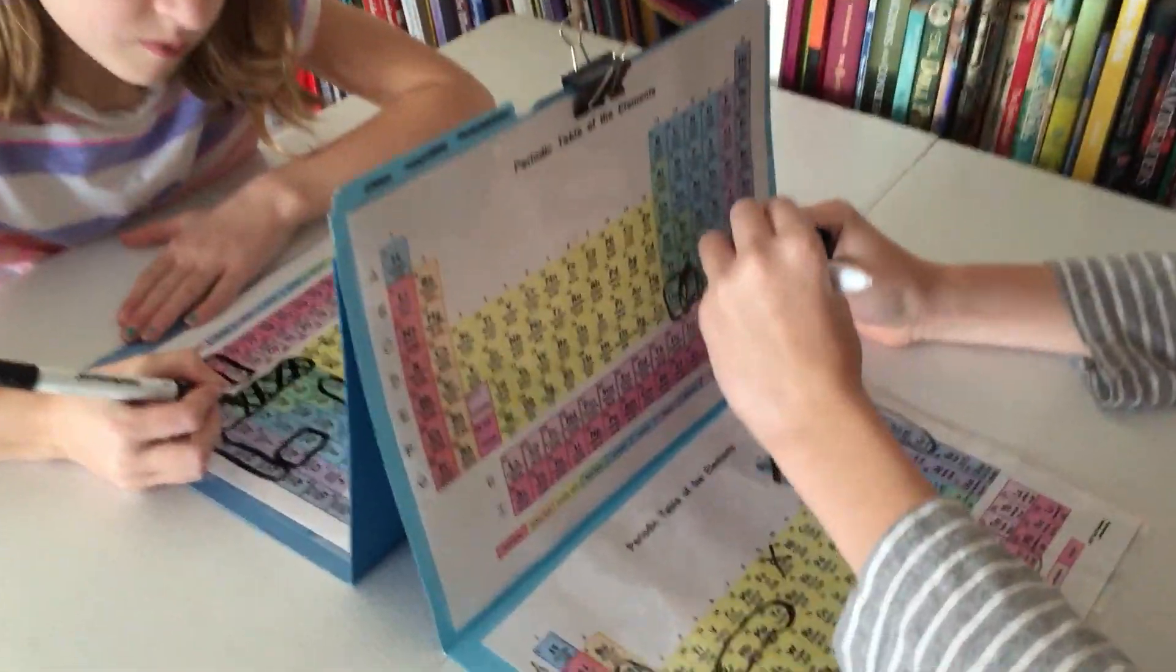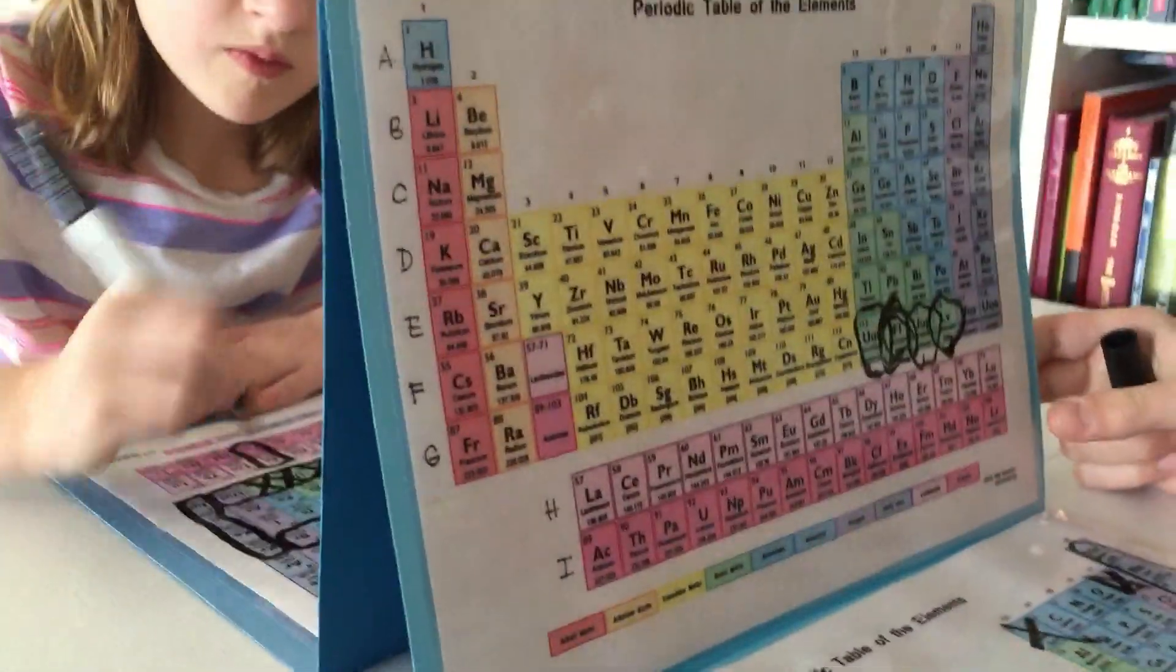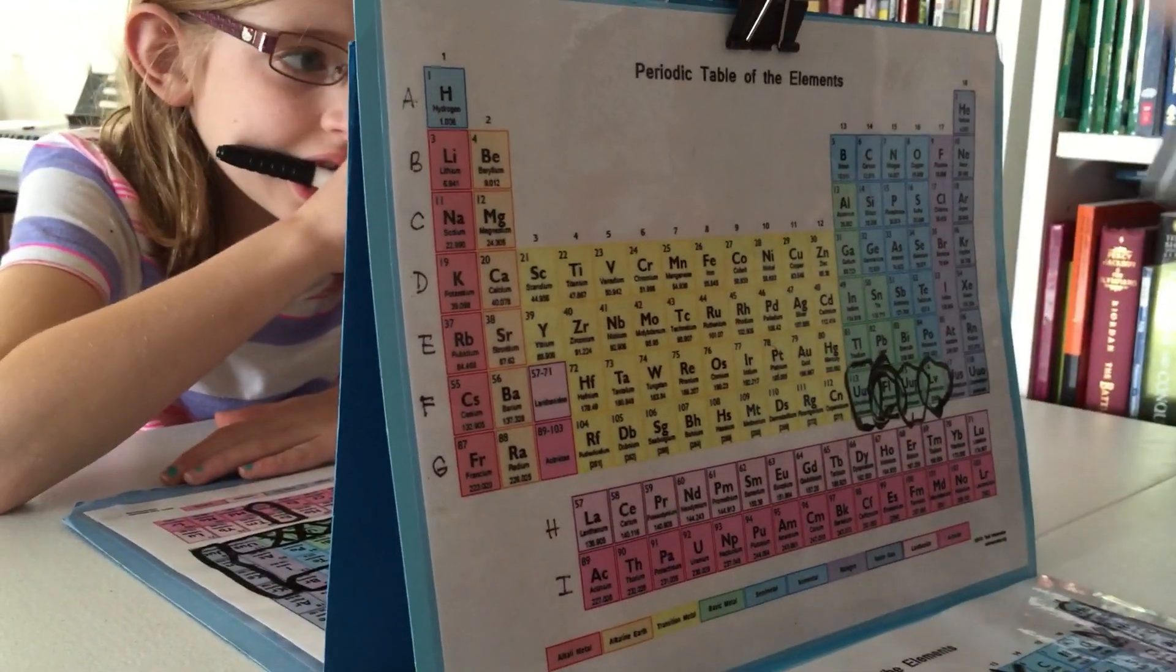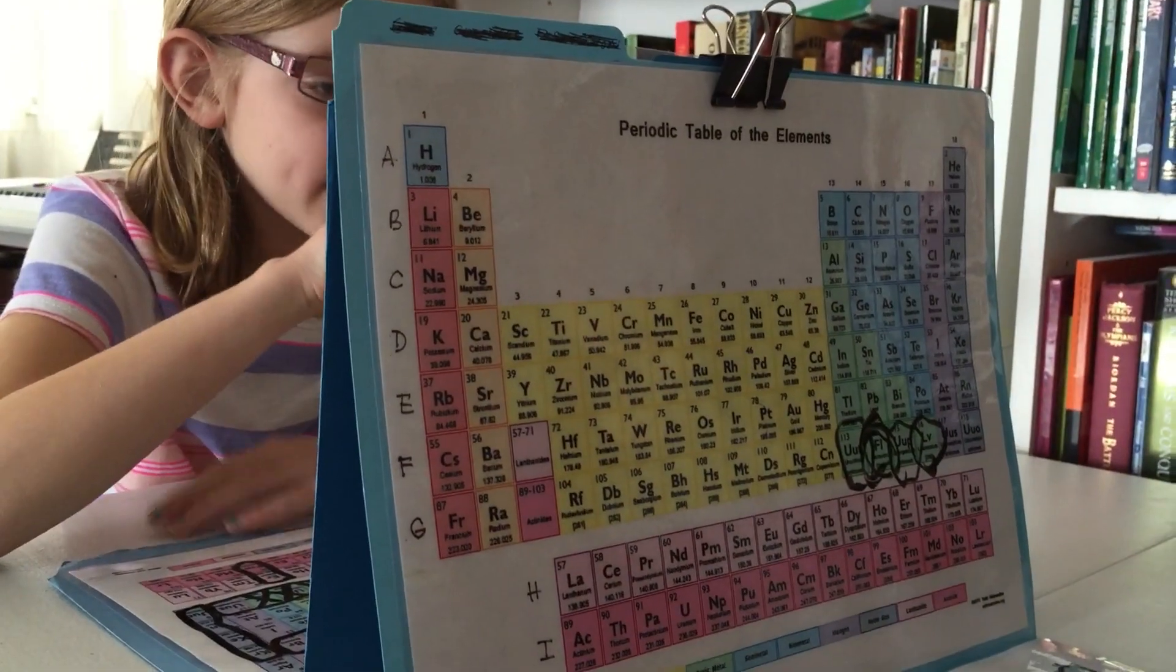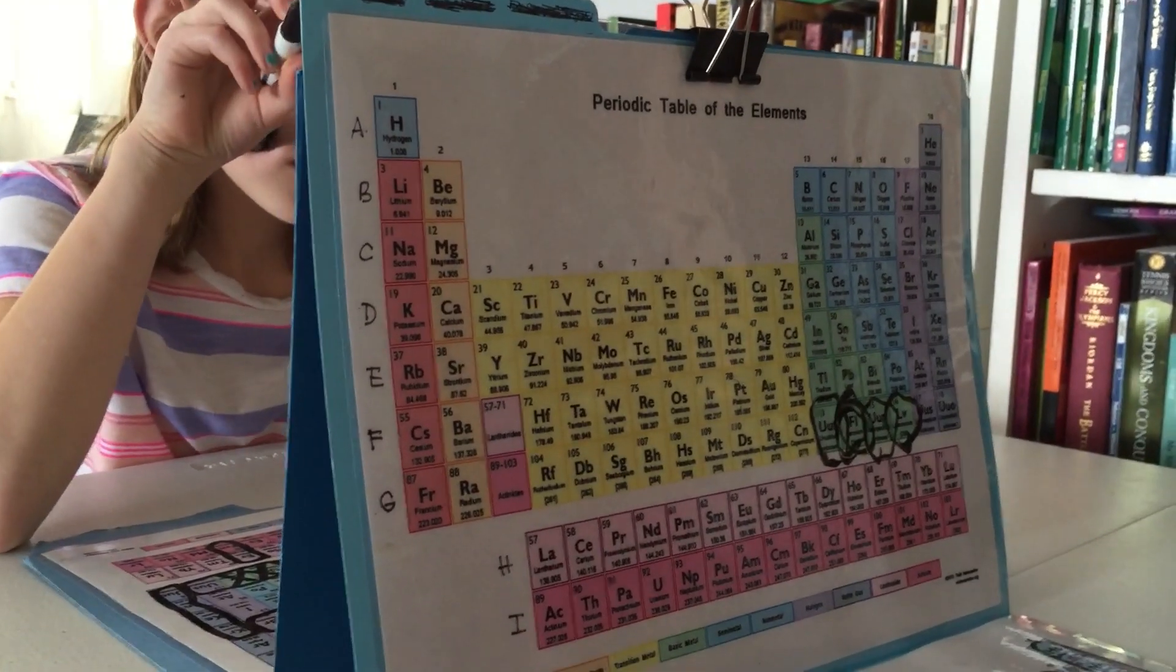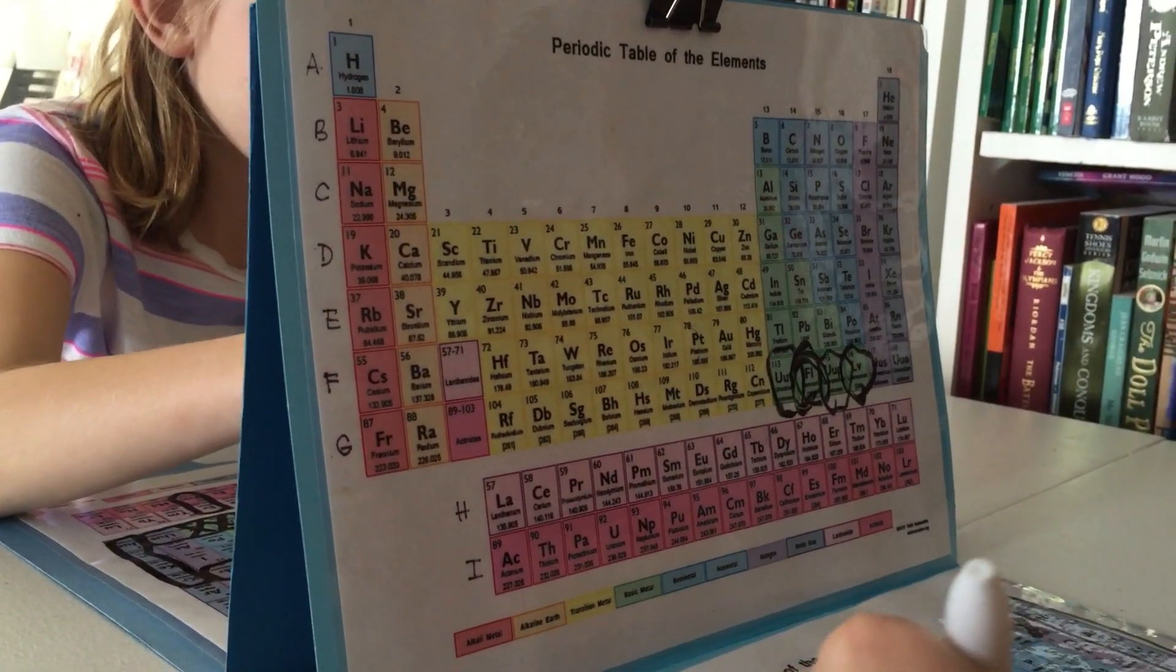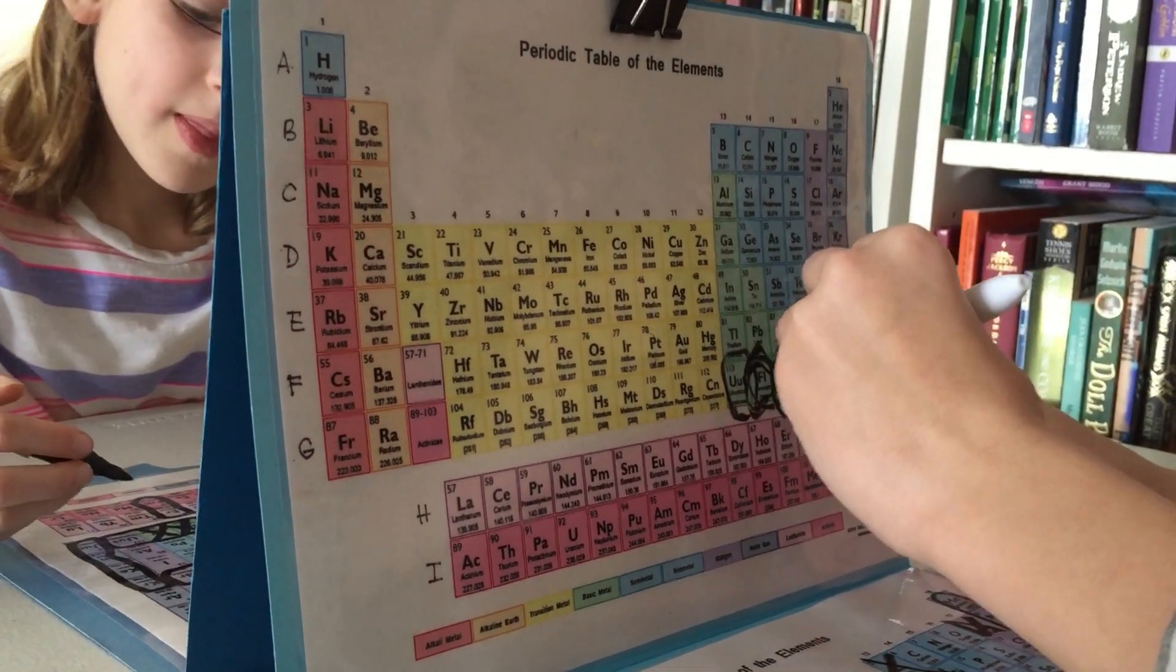Another thing we've done, since my kids are a little younger, is I've also drawn coordinates along the side. They can use letters, and that table is also numbered, so if they choose, they can do it that way and it makes it a little easier for them to find them.